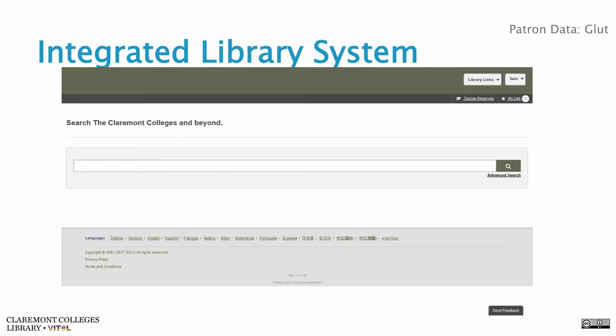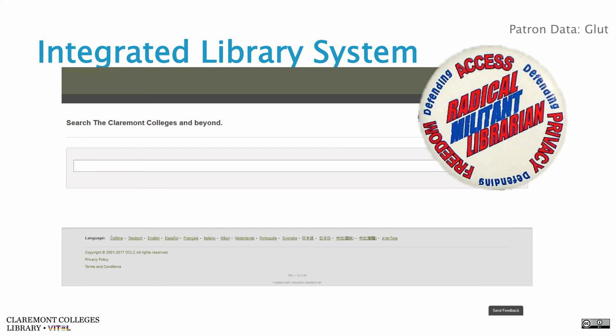We moved on to integrated library systems and the cards went away, which was a good thing, but now we've collected all the patron data into the ILS, where it can be subpoenaed by the FBI as of 2001 with the USA Patriot Act. Libraries started scrubbing the ILS circulation data, which was good for patrons but bad for us — kind of hard to know how busy patrons were or how many times things were circulating. But it got us this cool button that says we're radical militant librarians, so kind of a net positive.